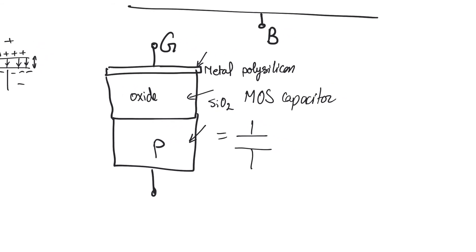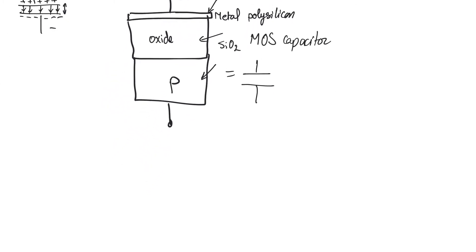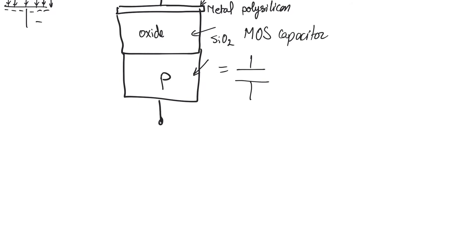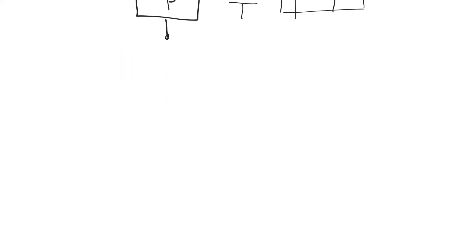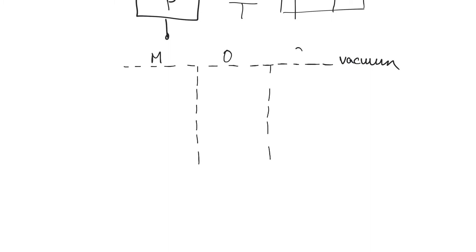Let's draw the band diagram of the MOS capacitor, and as always we will begin by drawing the flat band diagram, which assumes a flat vacuum level. We will assume that MOS capacitors are turned 90 degrees, because this leads to more manageable band diagrams. So we have the metal, the oxide, and then the semiconductor laid out horizontally, and we begin by drawing a flat vacuum level.